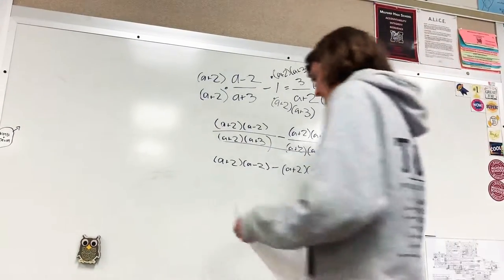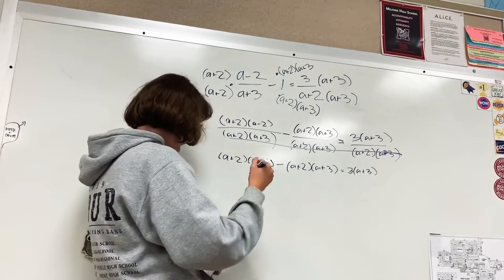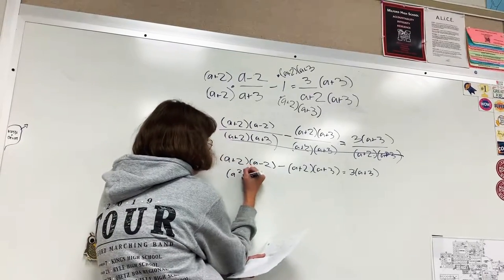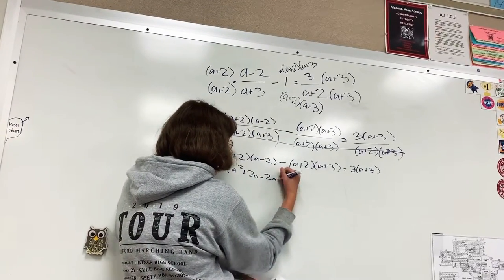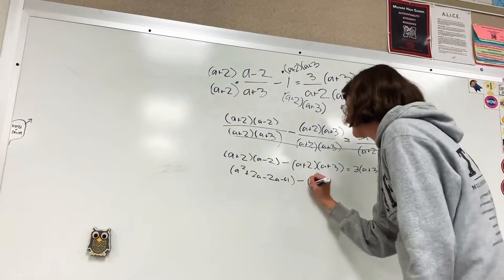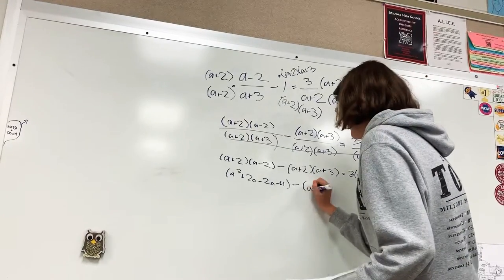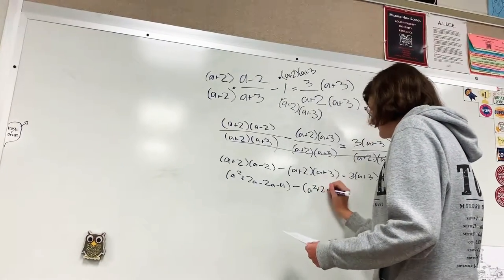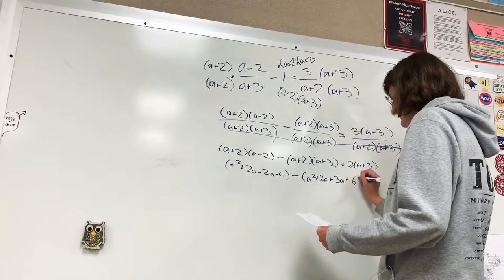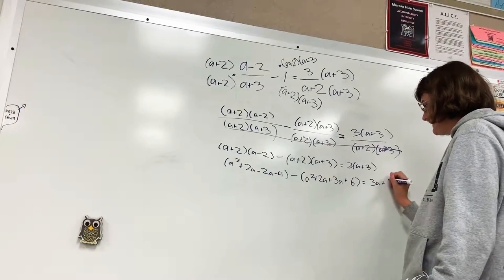So then you just want to go ahead and FOIL it out, and then you end up with a² + 2a - 2a - 4, minus a² + 2a + 3a + 6. So, and then that's equivalent to 3a + 9.